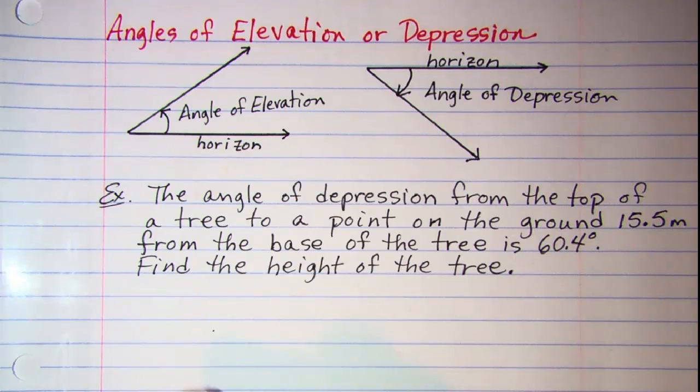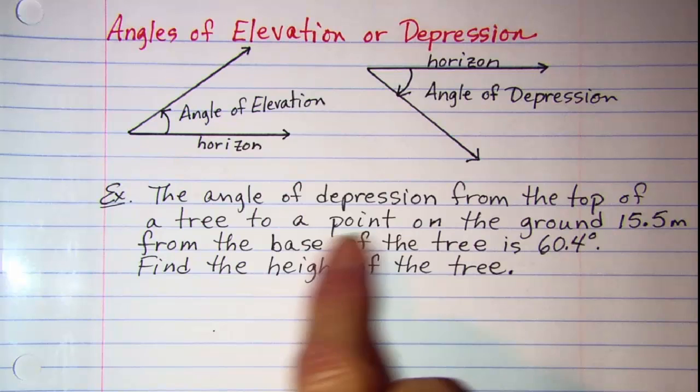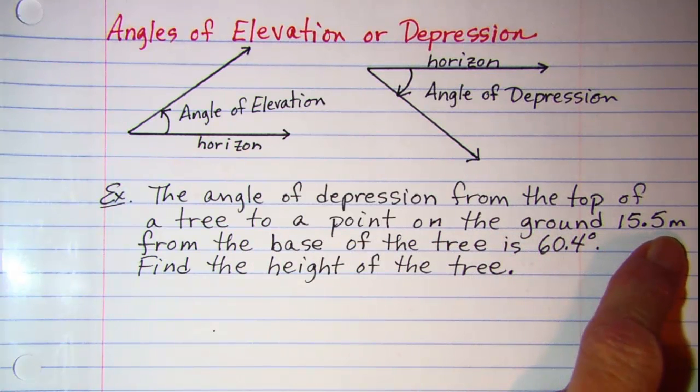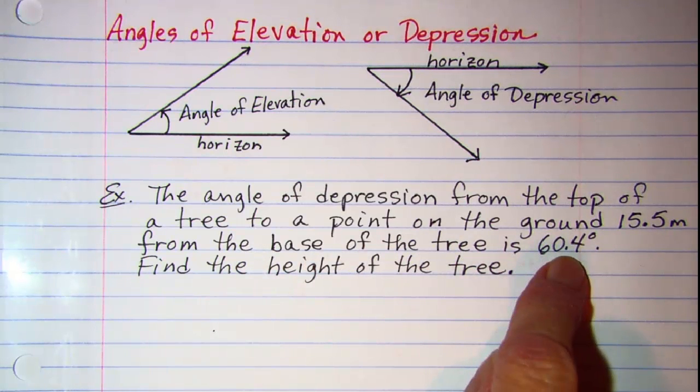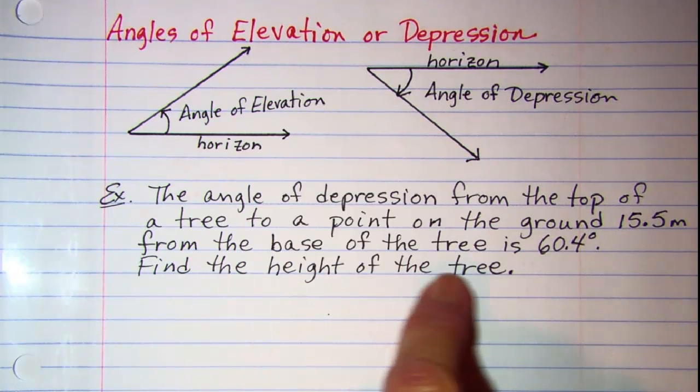The problem that we'll be doing is the angle of depression from the top of a tree to a point on the ground 15.5 meters from the base of the tree is 60.4 degrees. And we're asked to find the height of the tree.